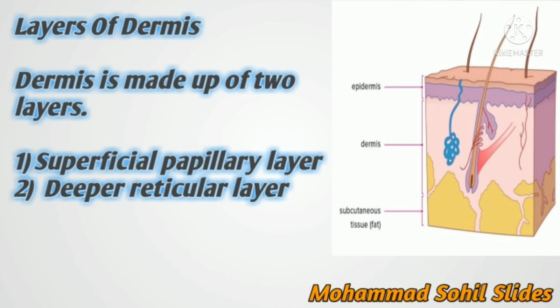The reticular layer is made up of reticular and elastic fibers. These fibers are found around the hair bulbs, sweat glands, and sebaceous glands. The reticular layer also contains mast cells, nerve endings, lymphatics, epidermal appendages, and fibroblasts. Immediately below the dermis, subcutaneous tissue is present.